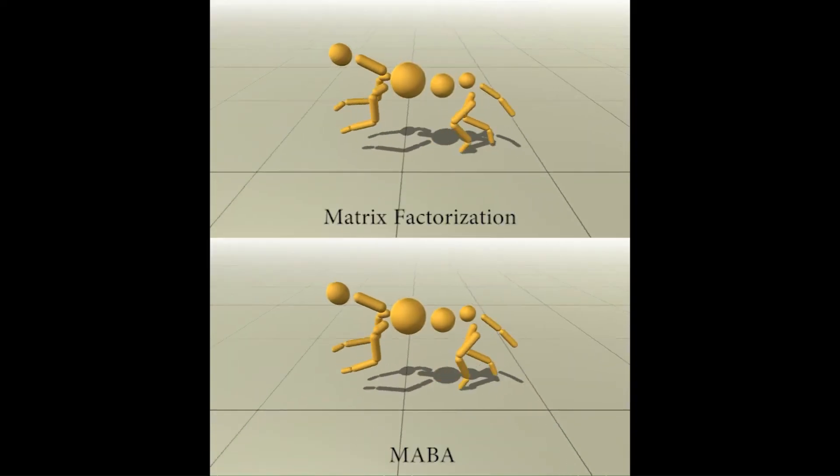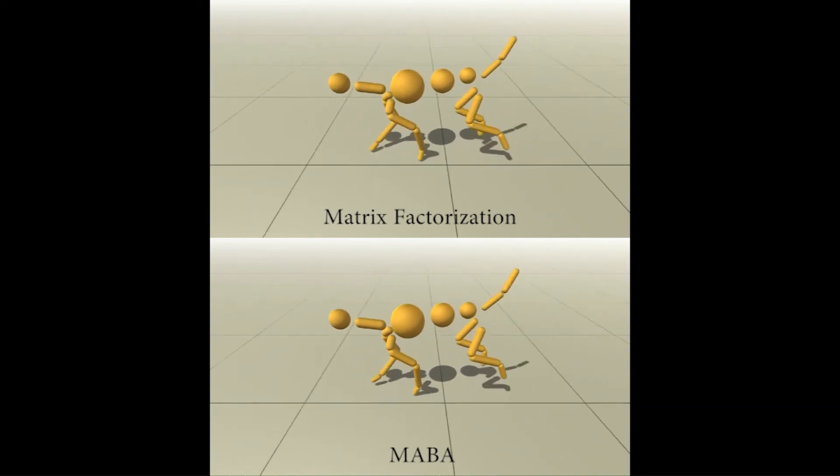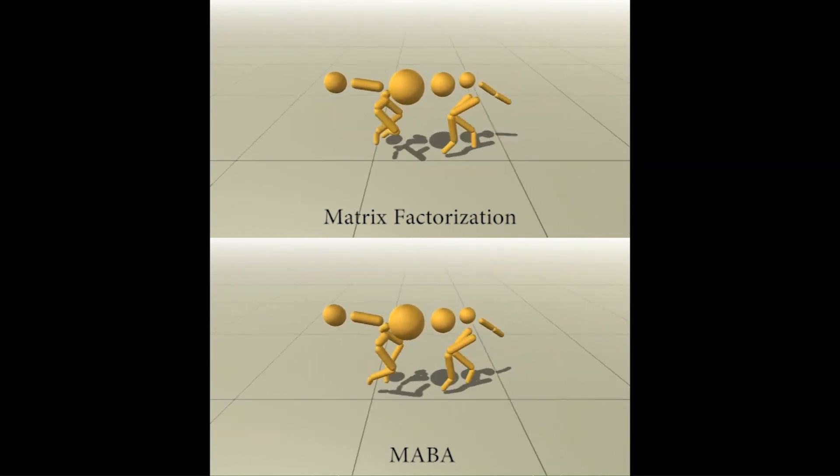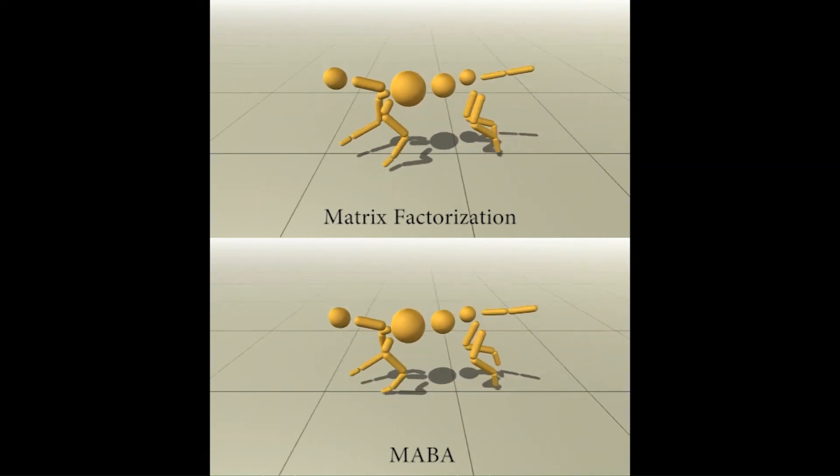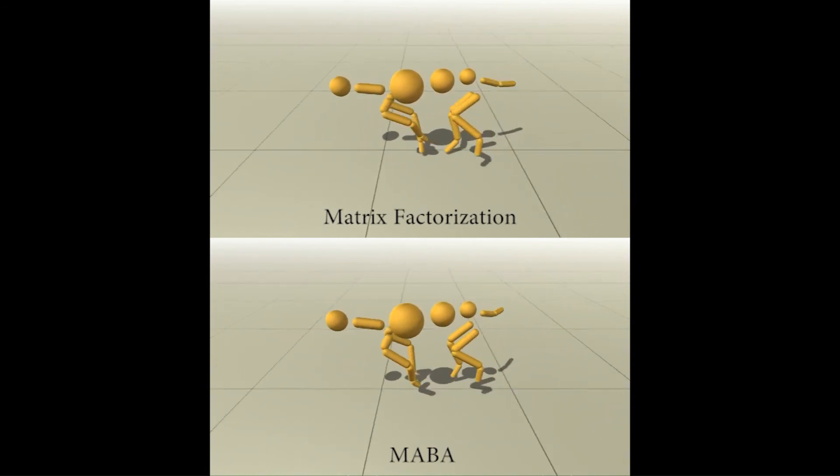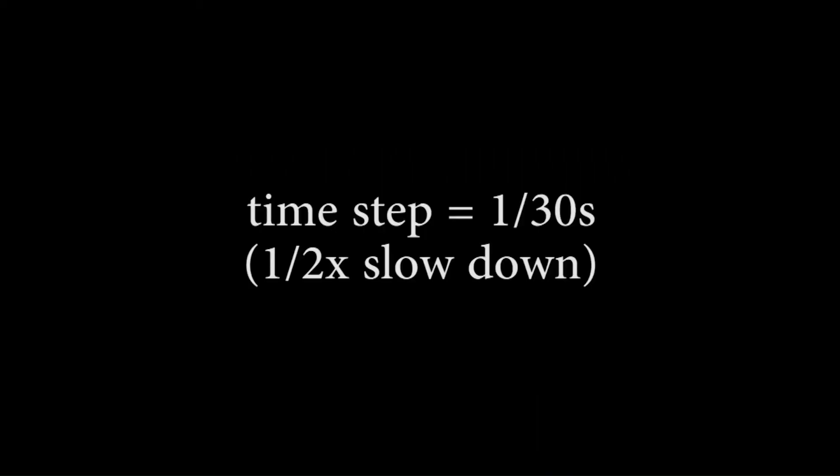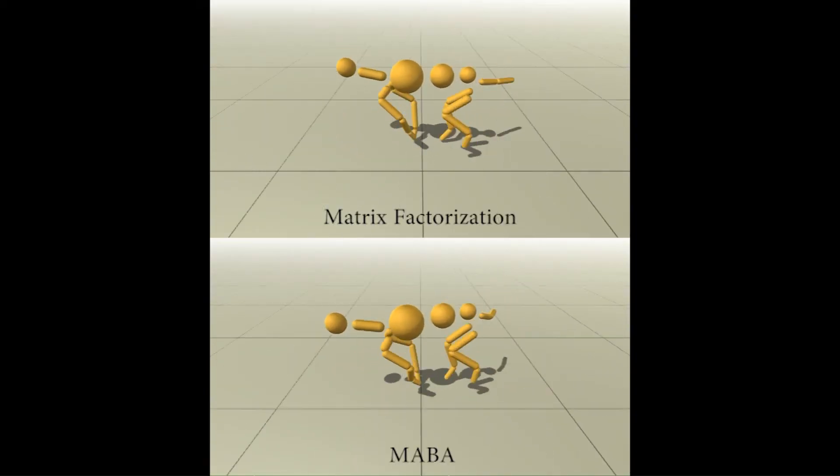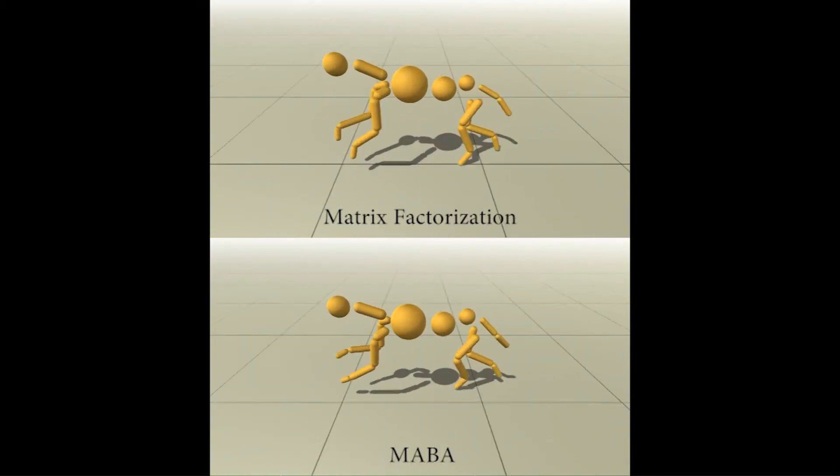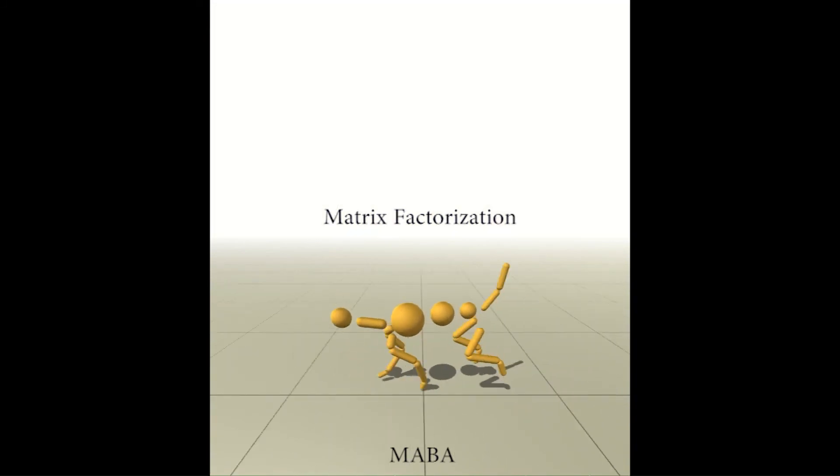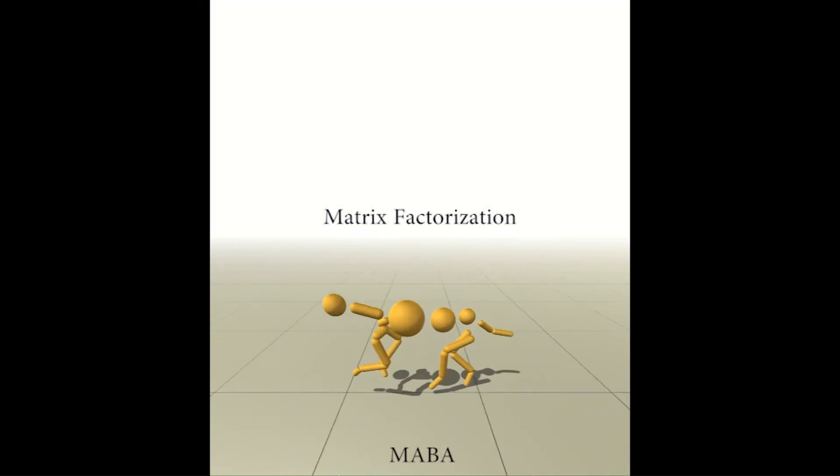This video shows the tracking result when the time step is 1 over 120 seconds. The tracking artifacts for the matrix factorization method can be seen clearly. When we use 1 over 30 seconds time step, the matrix factorization method explodes quickly while MABA remains stable.